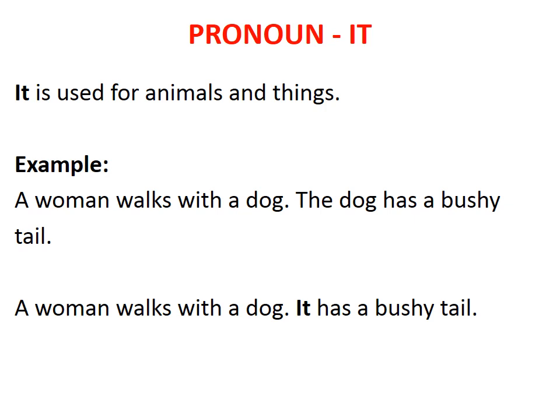The pronoun 'it' is used for animals and things. See the example: 'A woman walks with a dog. The dog has a bushy tail.' In place of 'the dog', we use: 'It has a bushy tail.' In the same way, we use 'it' for things as well.